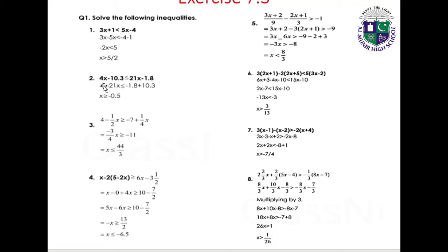Question 2: 4x minus 10.3 less than or equal to 21. Multiplying as needed: 4x less than or equal to minus 1.8 plus 10.3, giving x greater than or equal to minus 0.5. Solution: x ≥ -0.5.